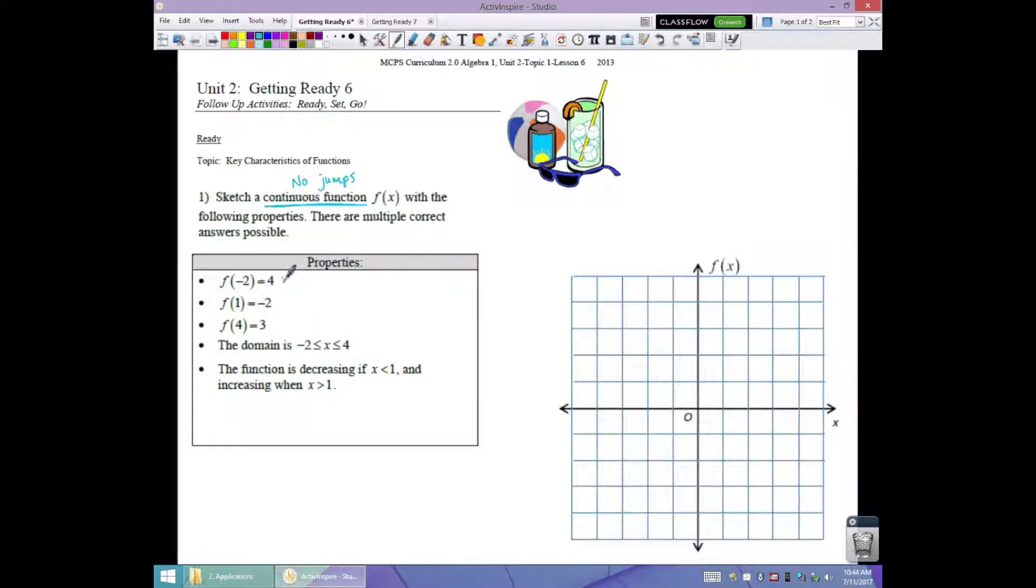And it needs to have these three points. These first three bullets are just giving you specific points. So this would be the point negative two, four, one, negative two, and four, three. So I have to have those three points on the graph. Let's do that first. So negative two, one, two, three, four. One, negative two, and four, three. So I've got all of those done. One, two, three requirements.